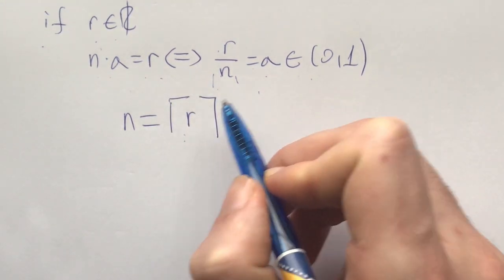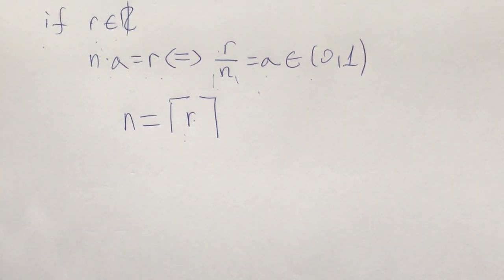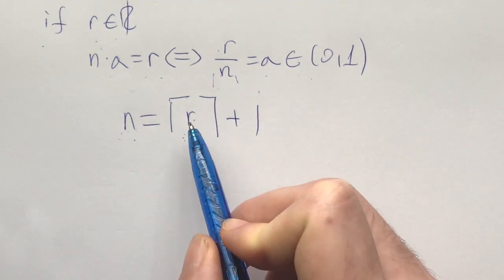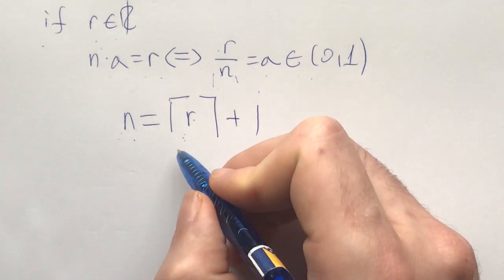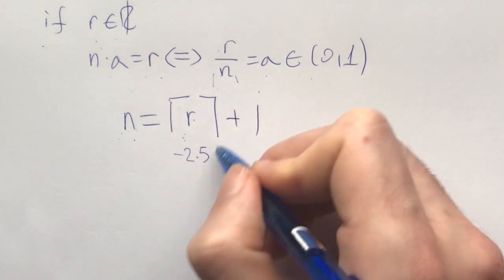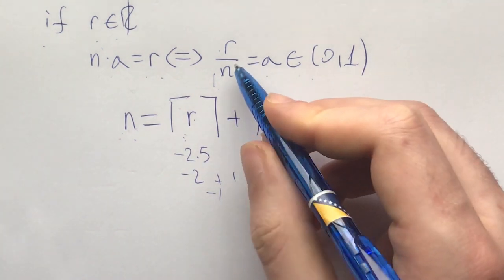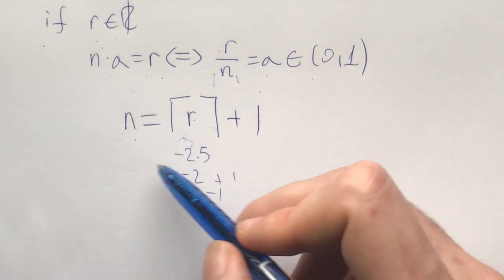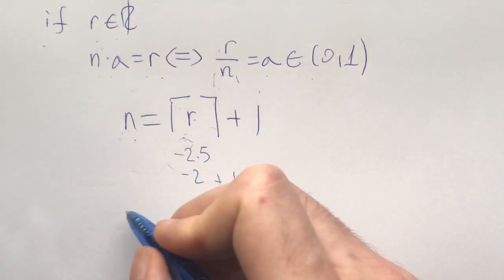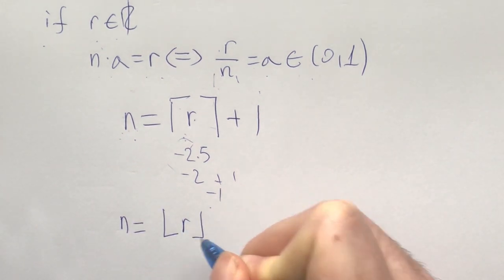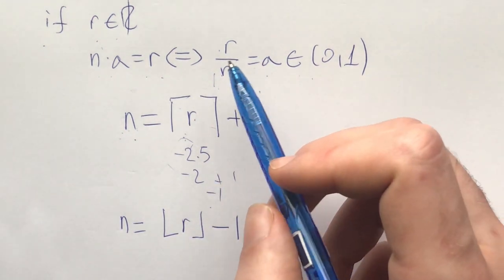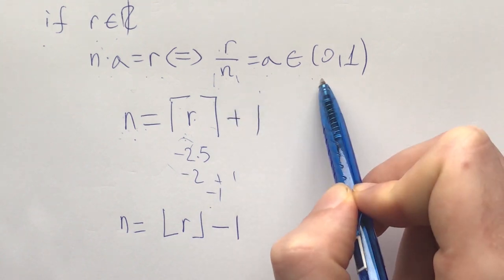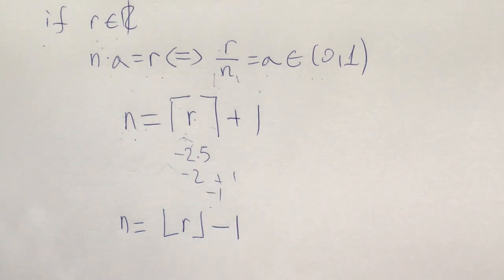However, this number isn't exactly between zero and one when r is a positive integer, so we add one. But there's a tricky part: what if r is negative? For example, if r is minus 2.5, then ceiling of r plus one gives minus one, and minus 2.5 divided by minus one is not between zero and one. So for negative r, we need a different n — luckily, n equals the floor of r minus one works.